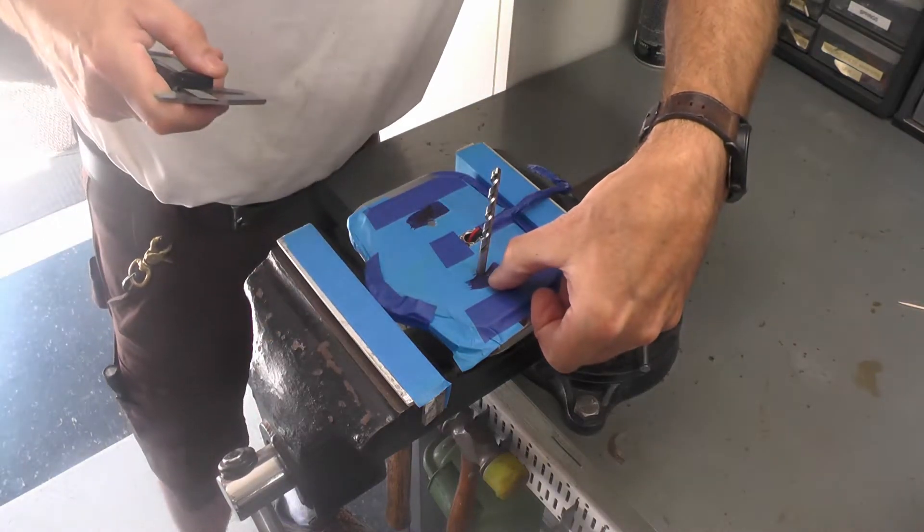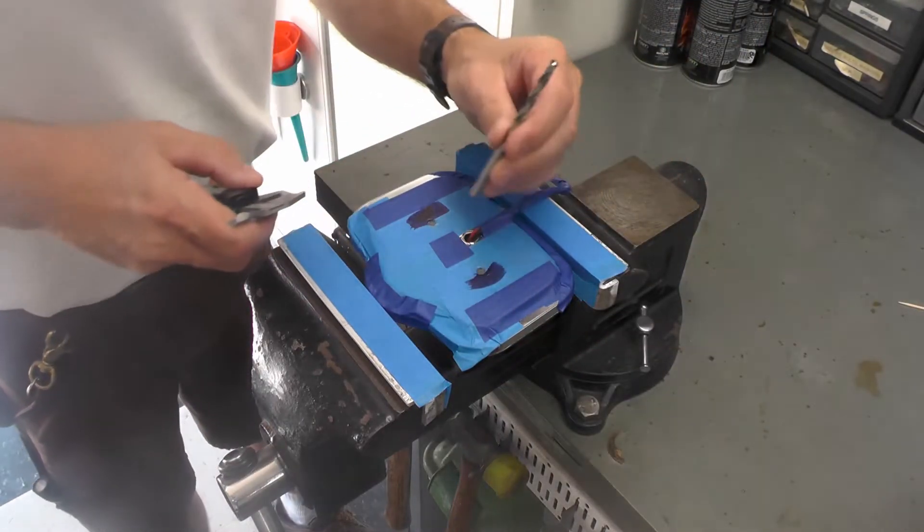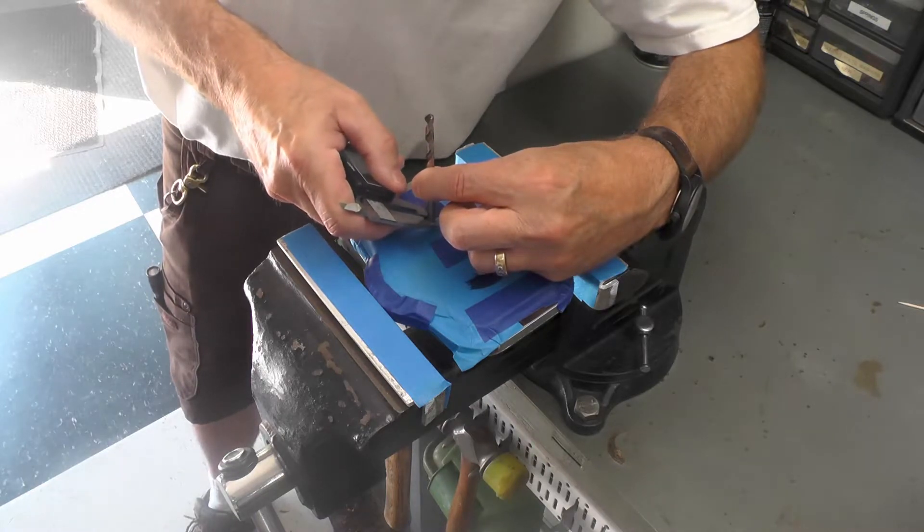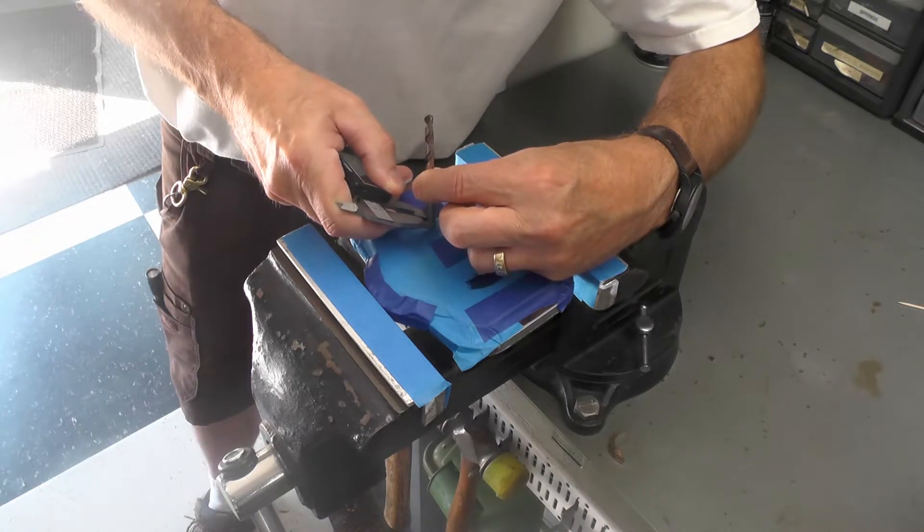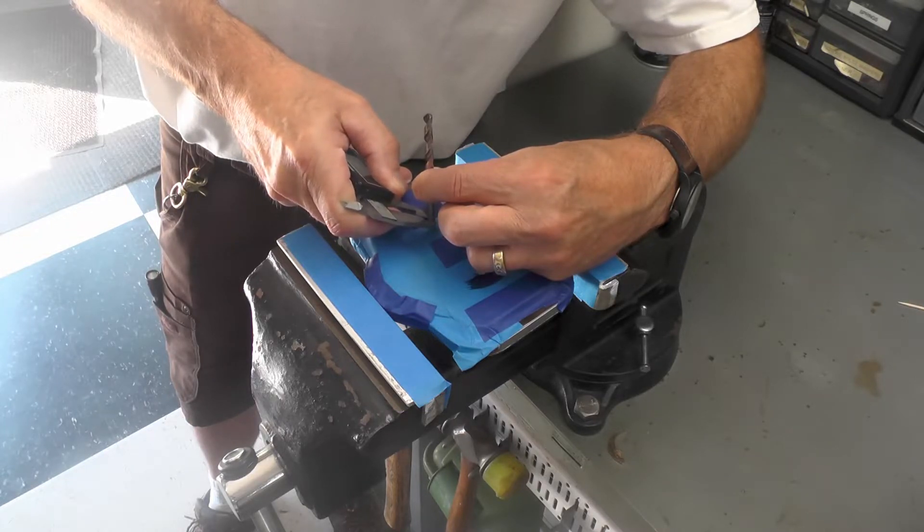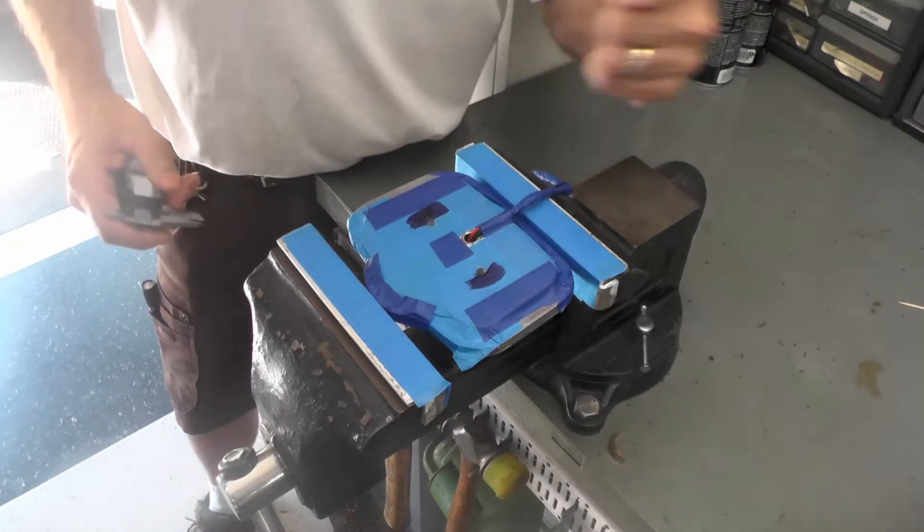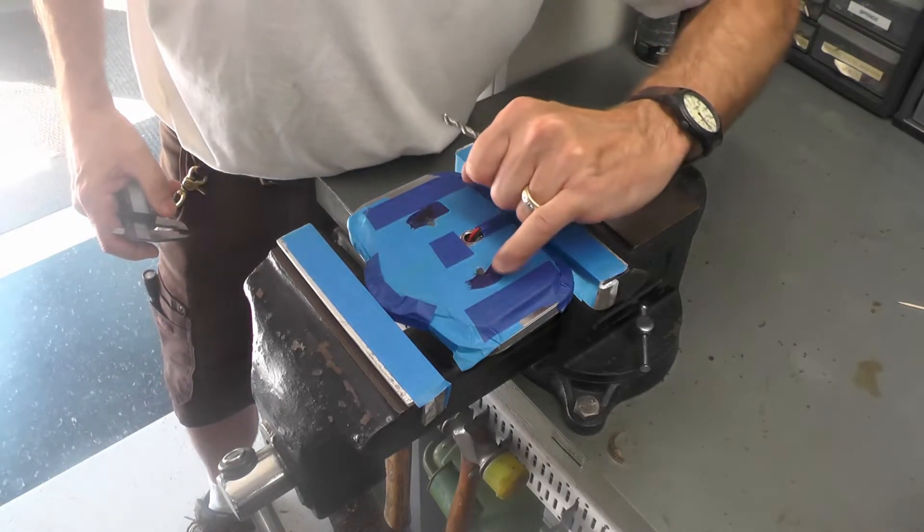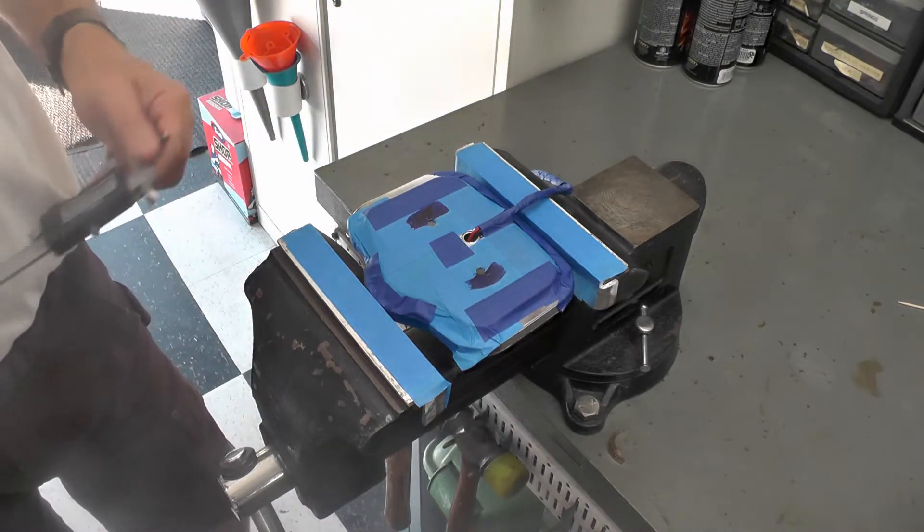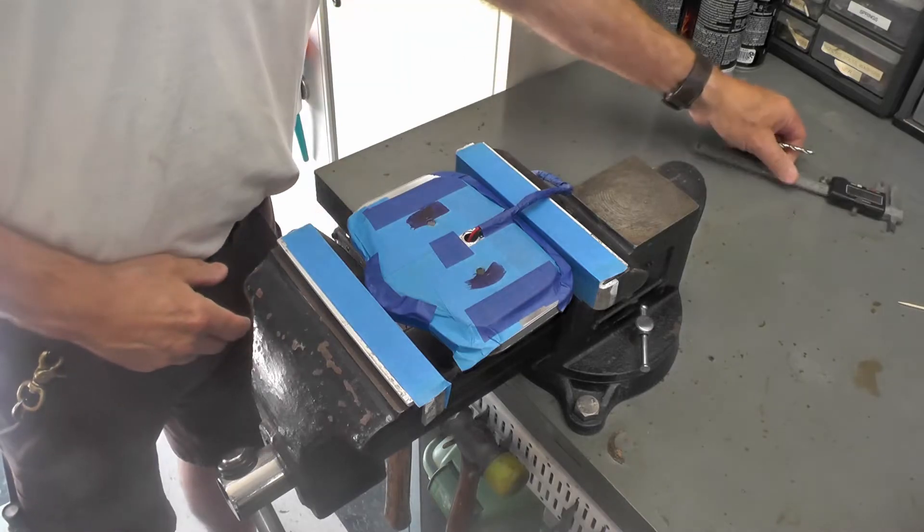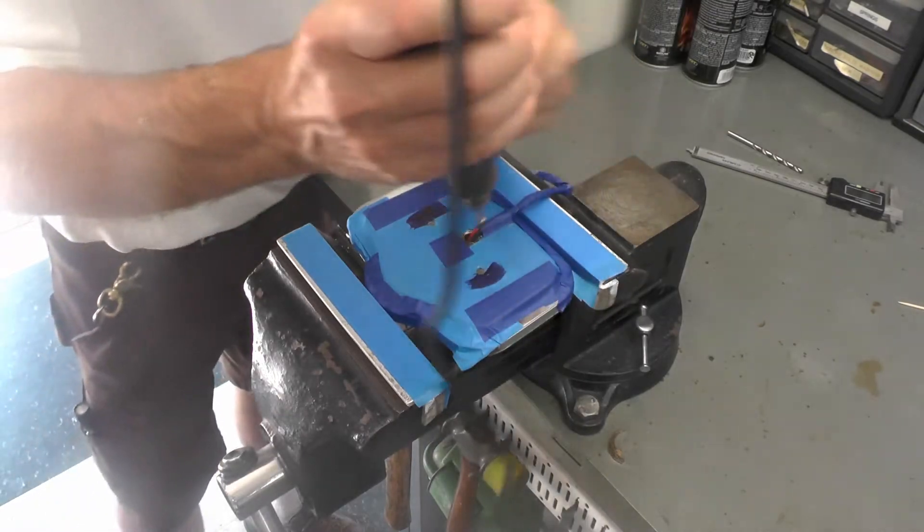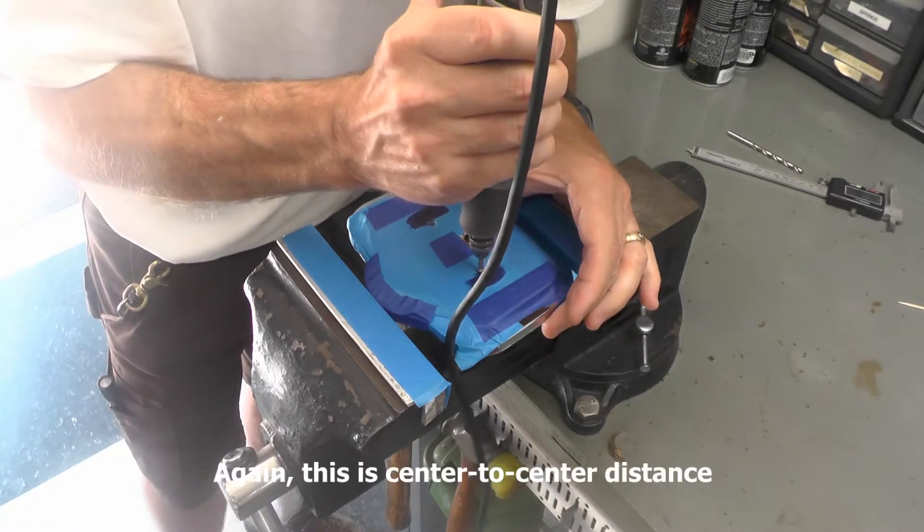I'm just going to make a mark. I don't know if you'll be able to see it, but I can. There is a mark right there and I'll do the same thing over here on this side. There's a mark right there and there's a mark right there that will be used to guide the milling bit right here.